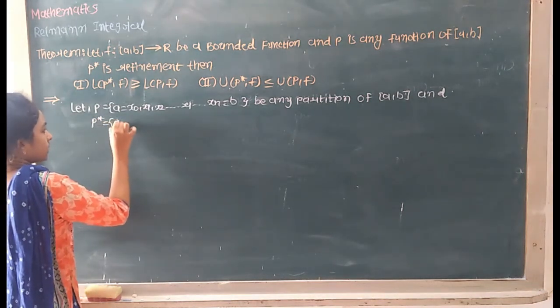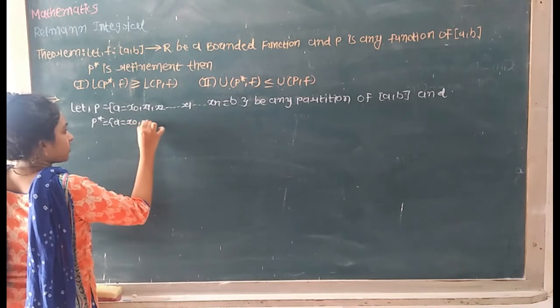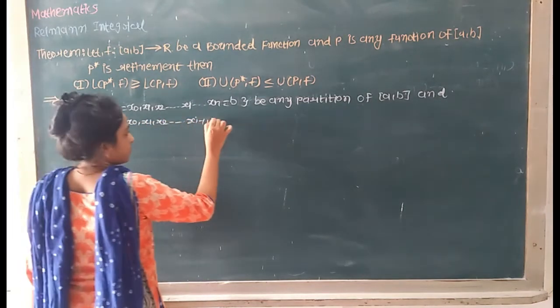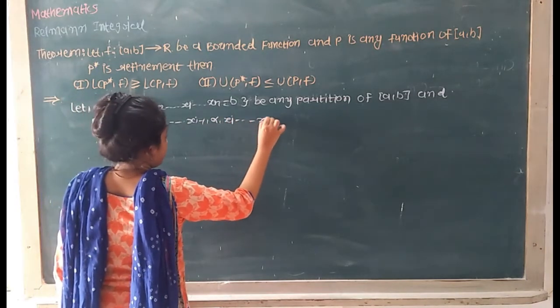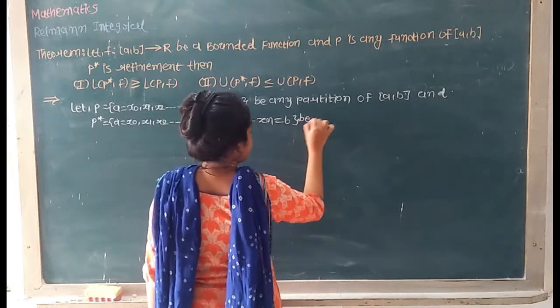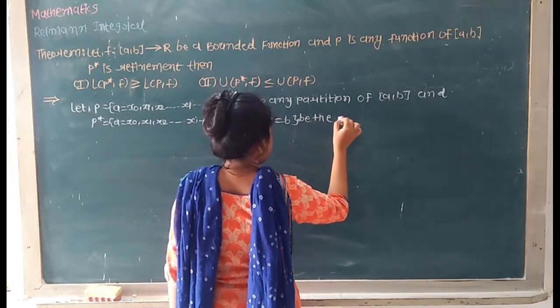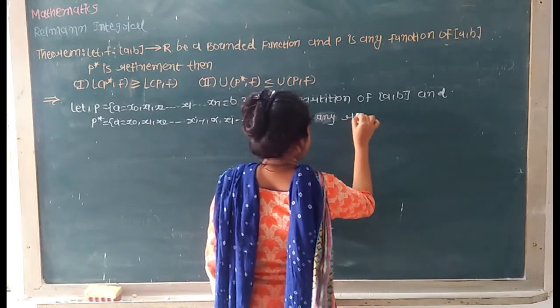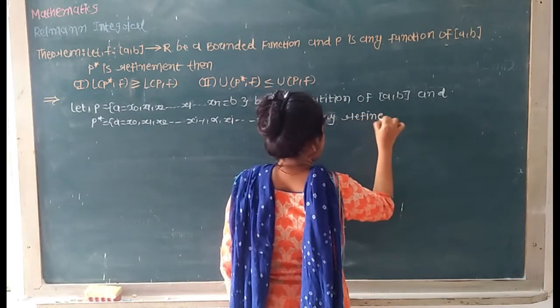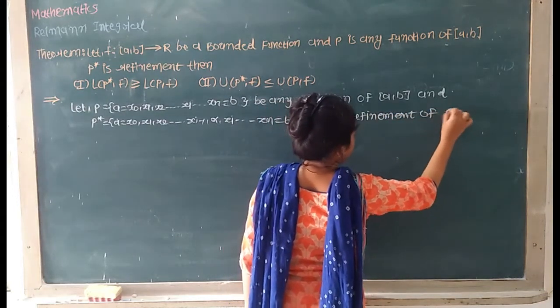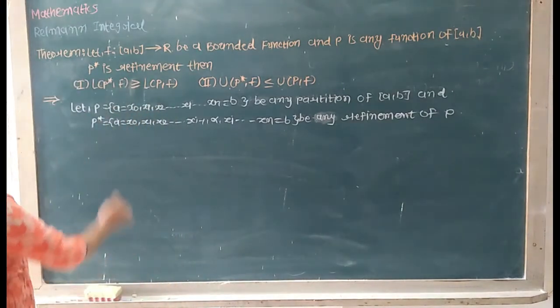Apply the requirement of partition 0 to N. P star is equal to A equals X0, so after doing the solving Xi minus 1 to alpha, up to Xn equals B. Be any partition refinement of partition P.